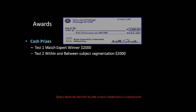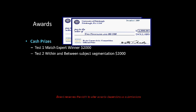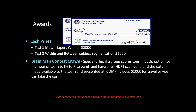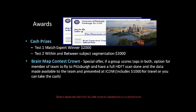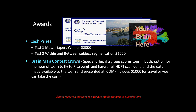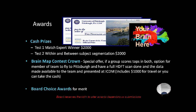In terms of awards, we will be giving two cash prizes of $2,000 each — one for test one matching of the expert, and one for test two within and between subject segmentation. In addition, we will have a brain map context test crown as a special offer if a group scores at the top in both. We will provide the option to fly the team or a team member to Pittsburgh for a full brain scan of the fiber tracks, with that data made available to the team and presented at the ICDM meeting. There will also be board choice awards for particular meritorious entries. The board reserves the right to alter the awards depending on the nature of the submissions, for example if submissions are extremely close in accuracy or there are insufficient submissions.